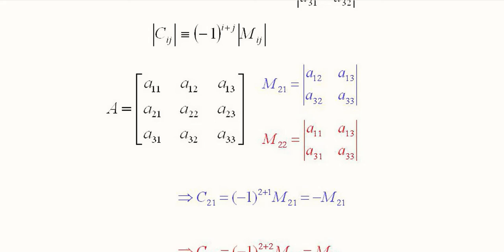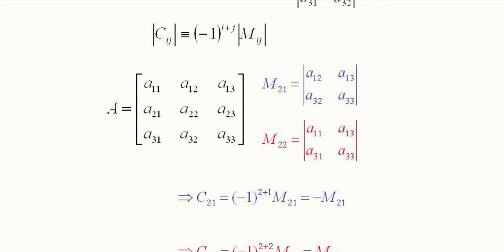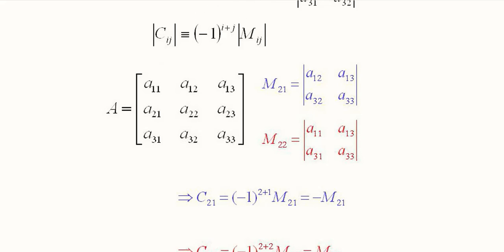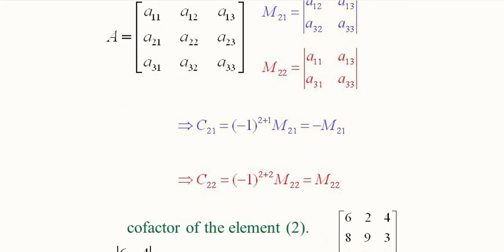We have chosen two possible minors: M21 and M22. For M22, the second row and second column are dropped, so the members on the vertices — a11, a13, a31, and a33 — are selected. For cofactor C12, we apply the formula: (-1) raised to the power 1+2 multiplied by minor M12.